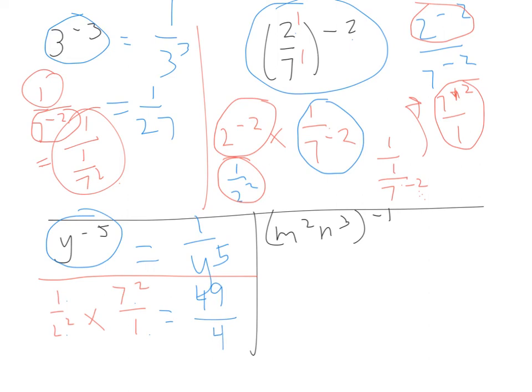Now, just like we did before, if we've got a power out here, we multiply these powers in here. So this will end up becoming m2 times negative 1, negative 2, n3 times negative 1, negative 3. So that just becomes the reciprocal with positive powers, m2 and 3. And that's all there is for those ones.